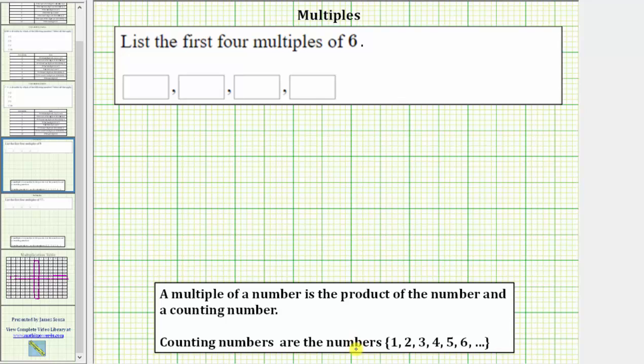Counting numbers are the numbers one, two, three, four, and so on, which means the first multiple of six is six times one, which equals six. The first multiple of any number is the number itself.